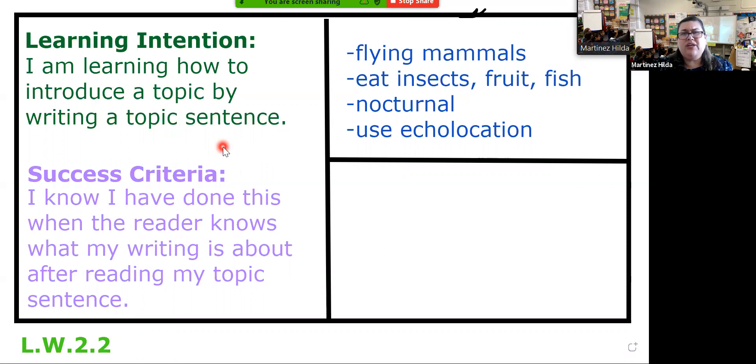We don't ever want our reader to be confused about what our writing is, and we're certainly not just going to list a bunch of facts in our writing. We're going to organize it in a way that the reader makes sense of it, and the best way to do that is by writing a really strong topic sentence to tell them what they're going to be reading about.